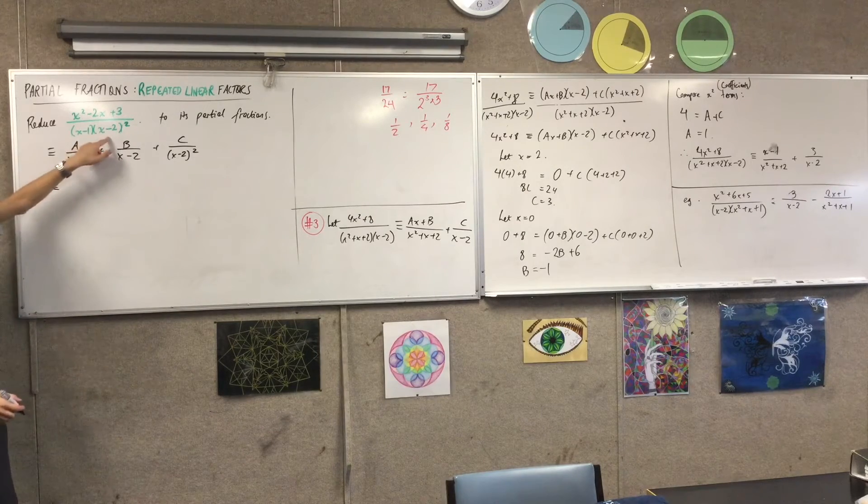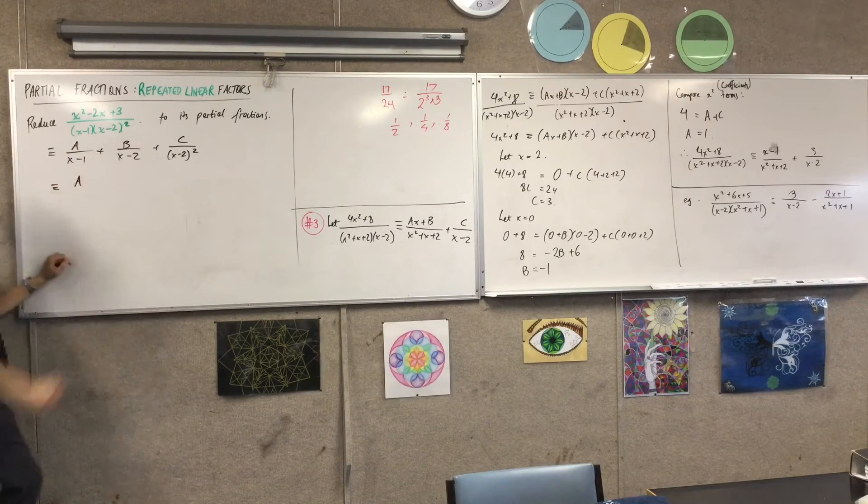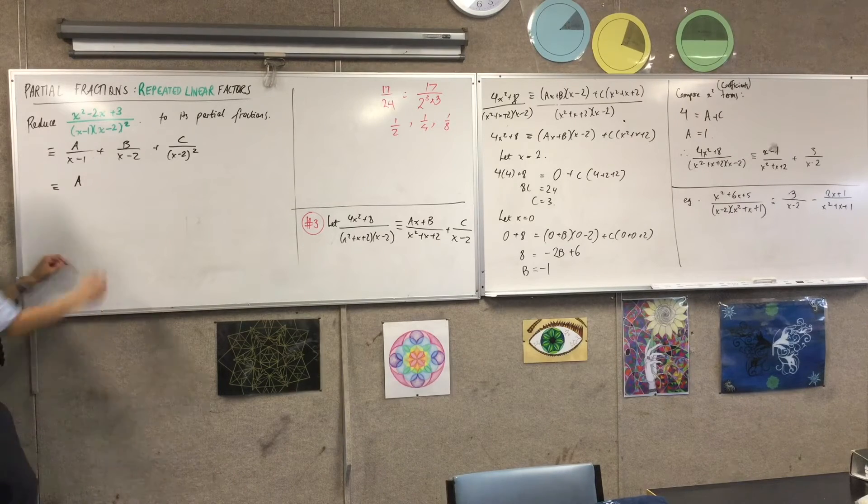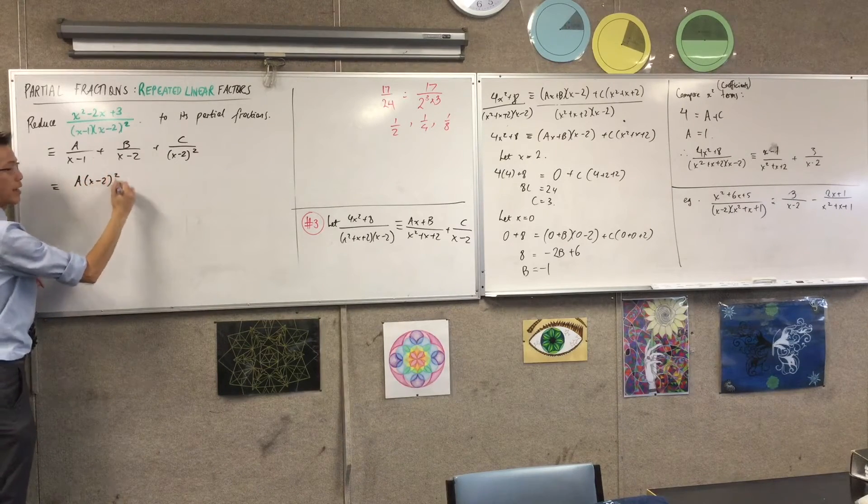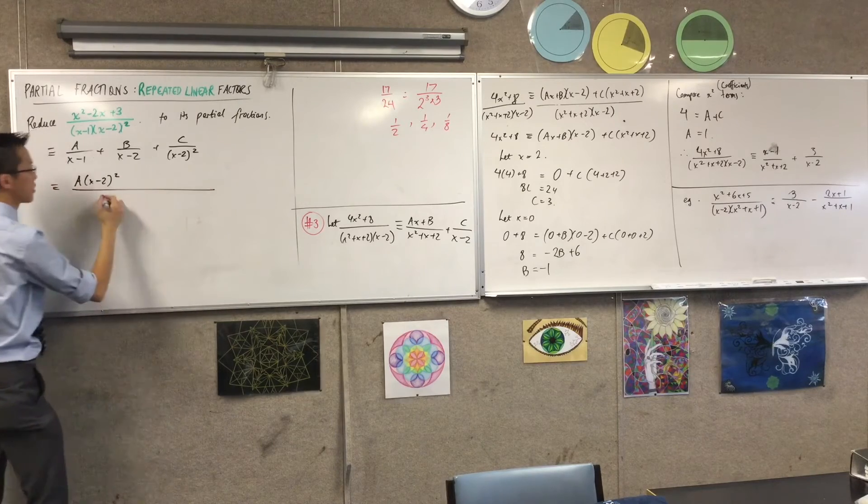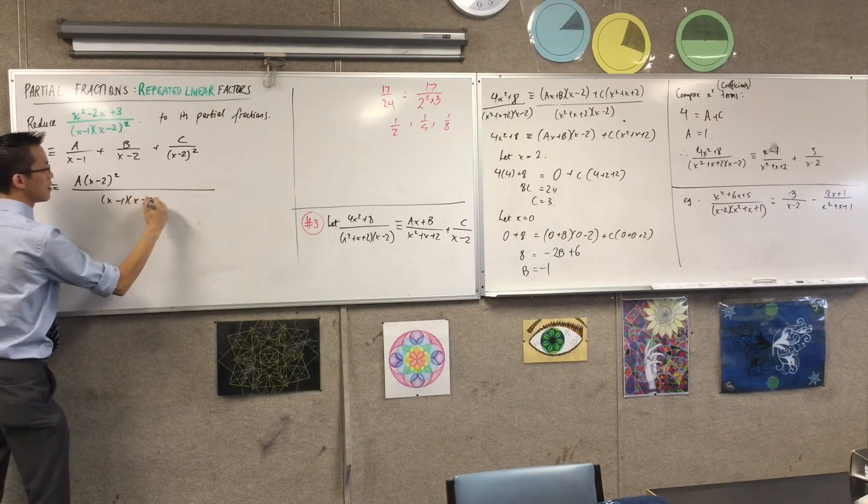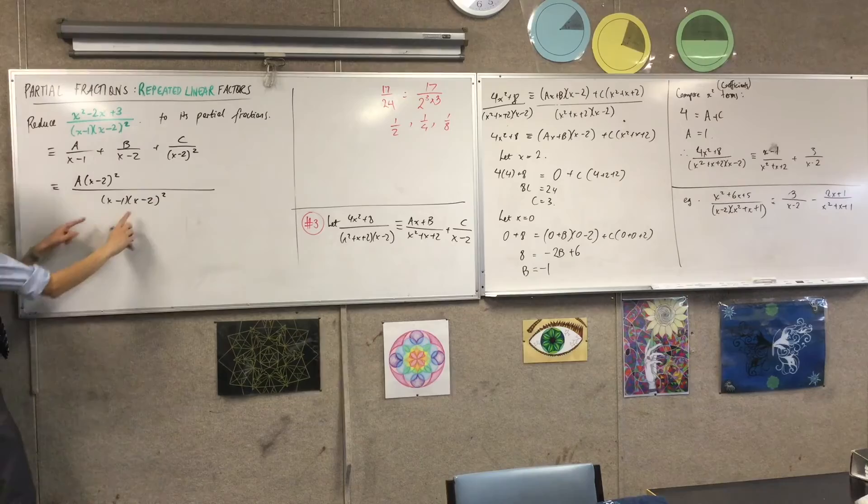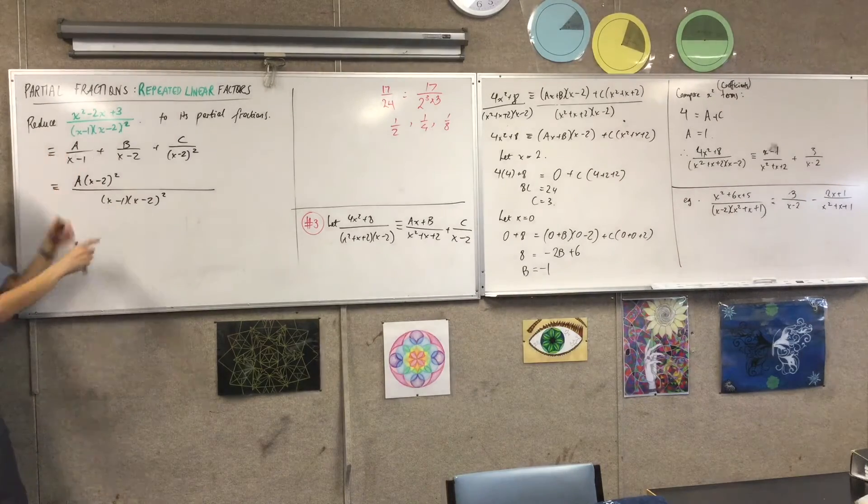So, this is going to be equal to, let's have a look here. I want to get them all in this denominator, right? So, how many a terms will I have? It's going to be x minus 2 all squared. Do you agree with that? If my denominator is going to be this. Can you see, if I cancel these, I'll come back to my original fraction. So, that looks good.